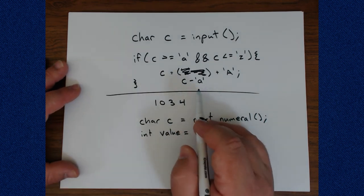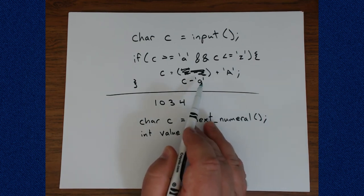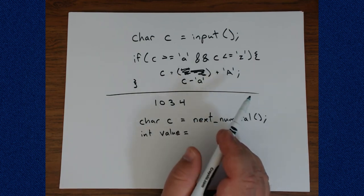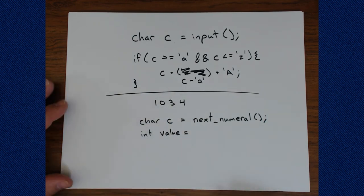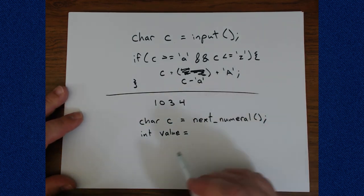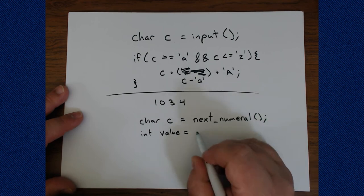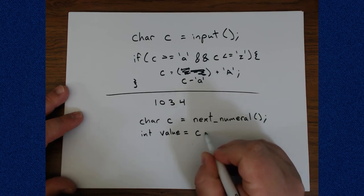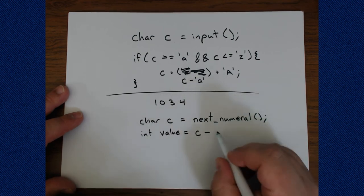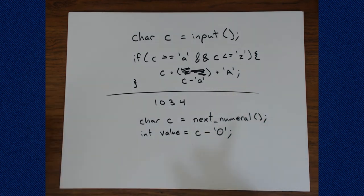So back here, we were finding how far away from the beginning of some section of the table our lowercase letter was. Now we have a digit, a numeral, and we want to find out how far away it is from the beginning of the numerals. So we're going to do the same kind of thing. We'll just subtract. We'll take c, the character that is a numeral that we just got. And we'll subtract the letter 0 or the character for 0 from it. So if you think about this, regardless of what these letters are,